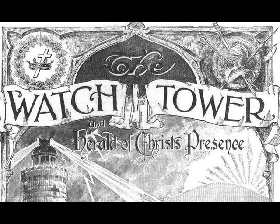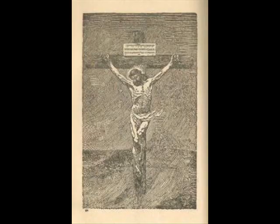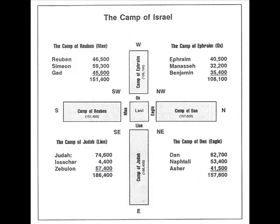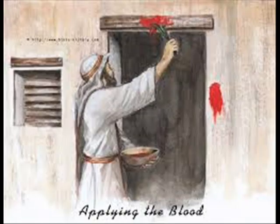You can find old Watchtower books that have Jesus on the cross. As far as the Old Testament, we can see that the encampment of the tribes of Israel around the tabernacle just so happens to look like a cross. And when you look at the Passover, when they applied the blood, it was in the shape of a cross.